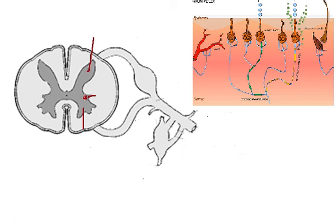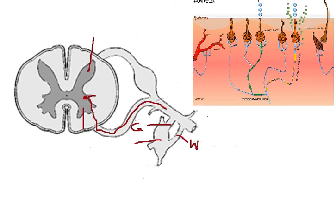The preganglionic fiber of the sympathetic nervous system leaves the spinal cord by using the ventral root of the spinal nerve. Then it enters the trunk of the spinal nerve. This is the sympathetic ganglion. This is the grey rami communicants, and this is the white rami communicants.